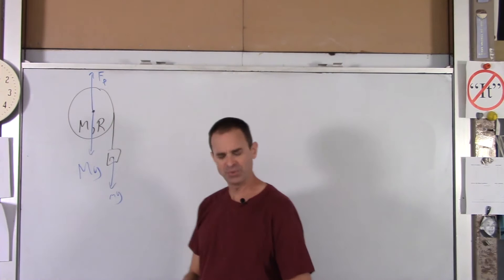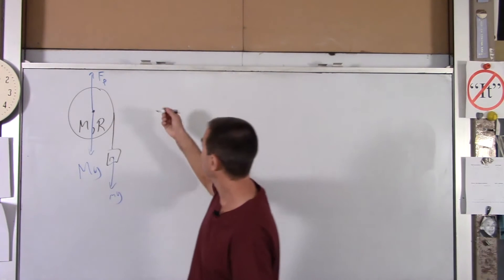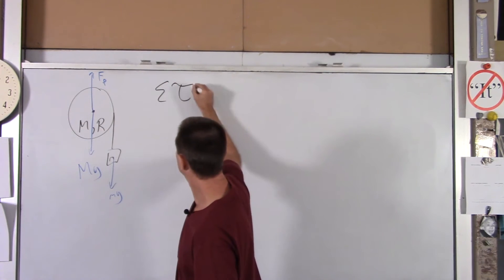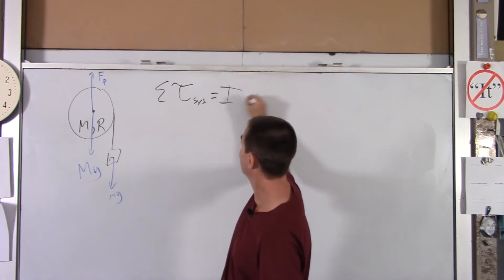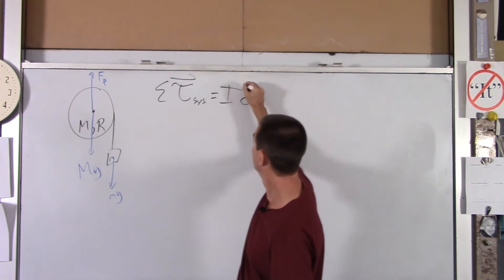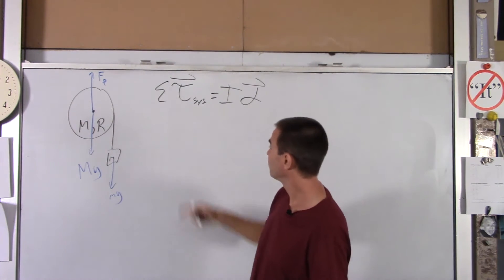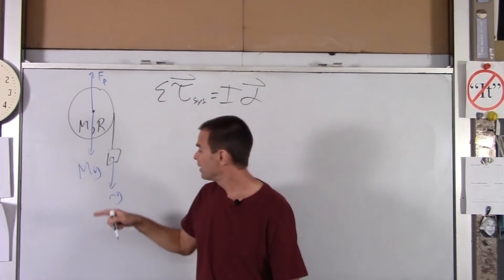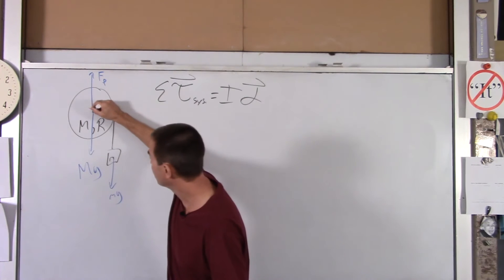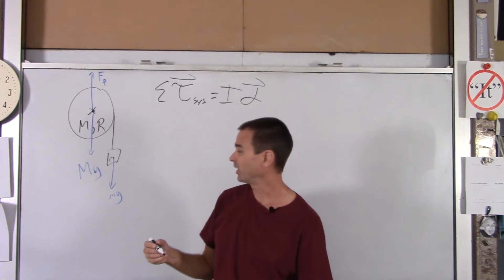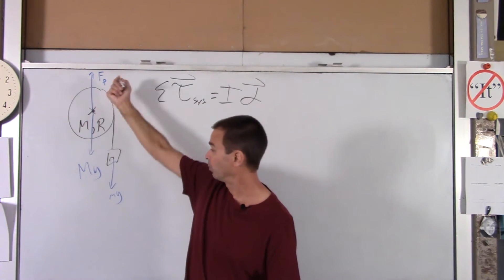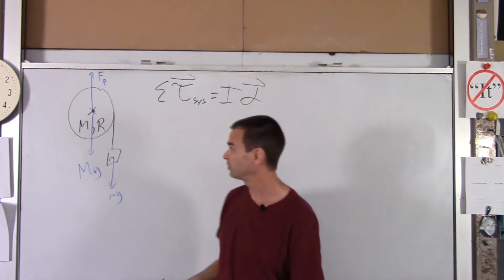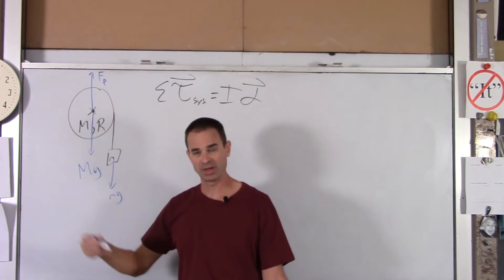So what we're going to do is we're going to do net torque on the system equals I alpha of your system. Now, the net torque on the system, well, we're going to do this as our axis. So in other words, a big mg in the pin force, whatever the support force is there, they don't cause any torque about that point because they act through that point. The only external force to the entire system is that little guy right there.